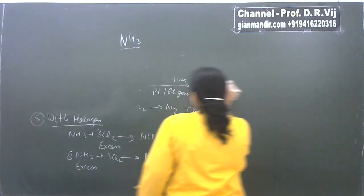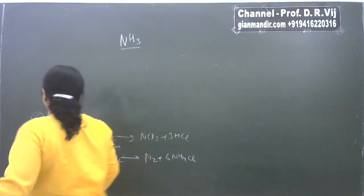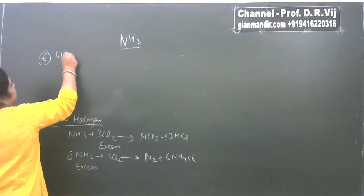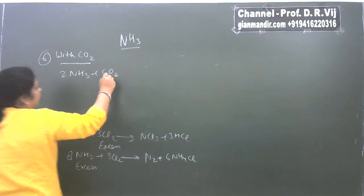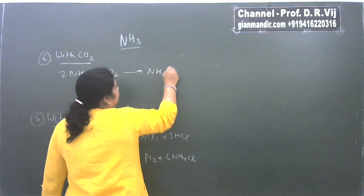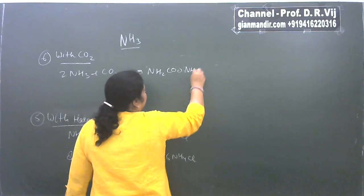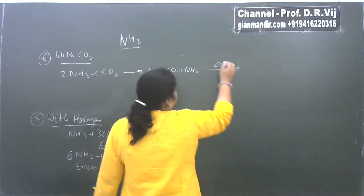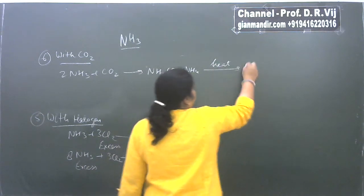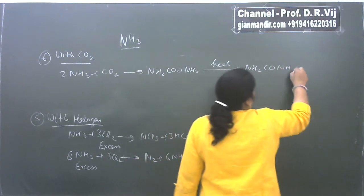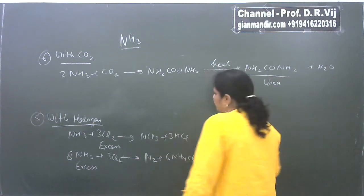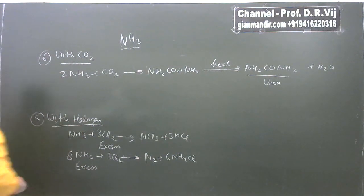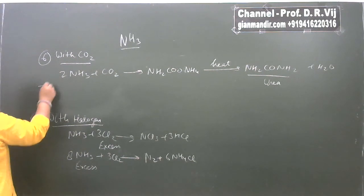Another important property is the reaction of ammonia with carbon dioxide. Ammonia gas reacts with carbon dioxide to form ammonium carbamate, and this ammonium carbamate on further heating gives urea and water. As you know, urea is used as a very important fertilizer.